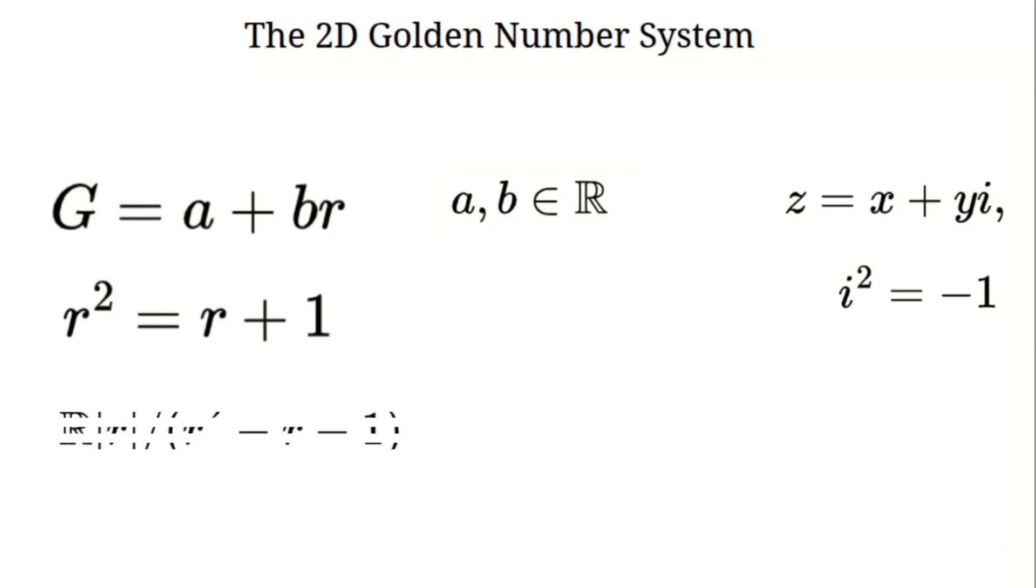Formally, we're in the ring of real numbers extended by R modulo R squared minus R minus 1. This means R squared minus R minus 1 equals 0, or simply R squared is R plus 1.